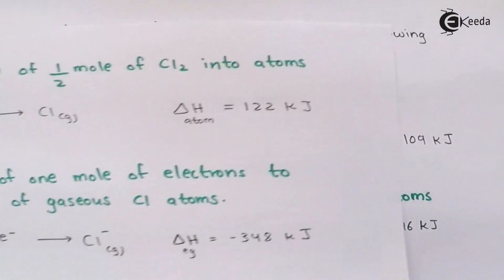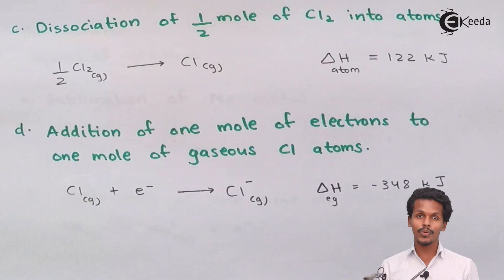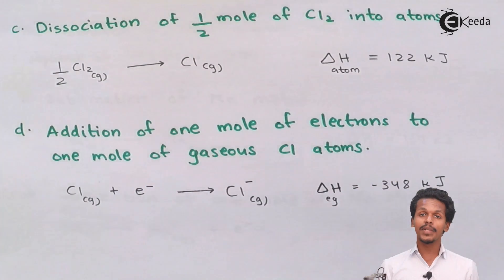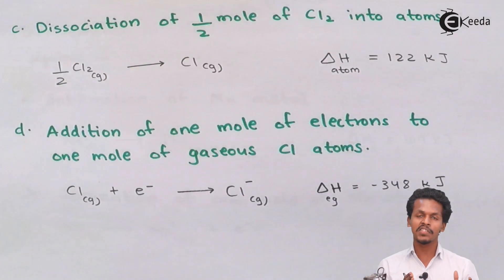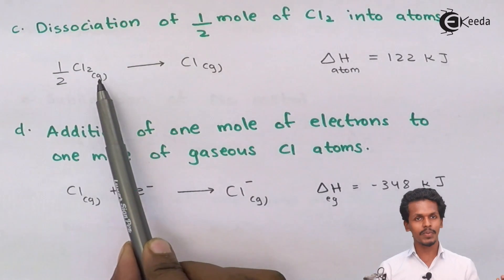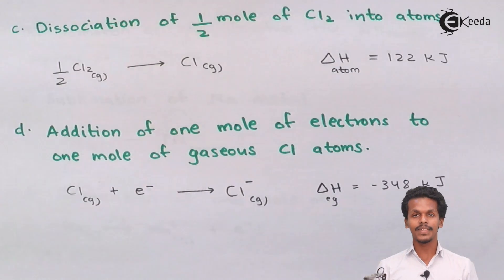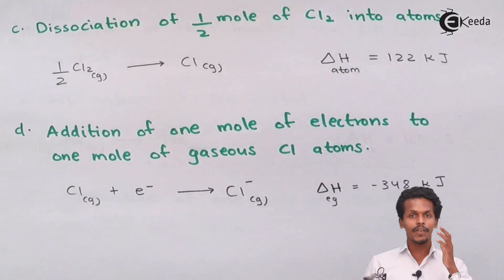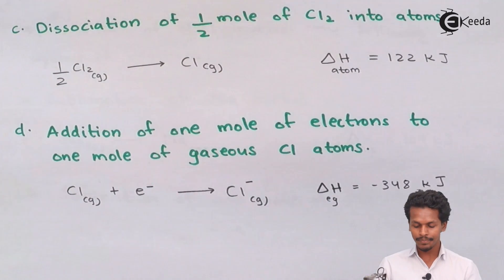Step C: Dissociation of ½ mole of Cl₂ into atoms. Chlorine is present in gaseous, diatomic form, so we need to dissociate ½ mol of Cl₂(g) into individual Cl atoms. The enthalpy of atomization, ΔH_atom = +122 kJ, meaning 122 kJ of energy is required to separate the Cl₂ molecule and produce monoatomic Cl in gaseous state.